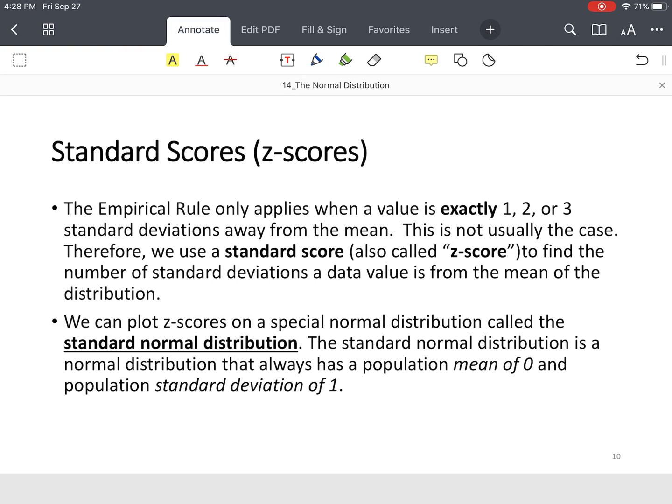Okay, now we're going to introduce standard scores or z-scores. You're often not going to have data values that are exactly one, two, or three standard deviations away from the mean. So we introduce a concept called a z-score to find the exact number of standard deviations a data value is away from the mean.